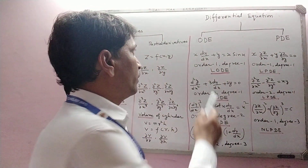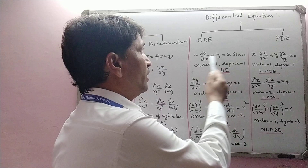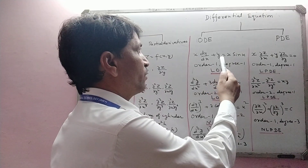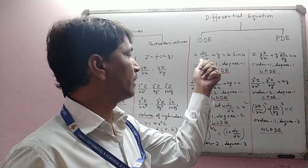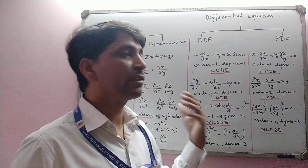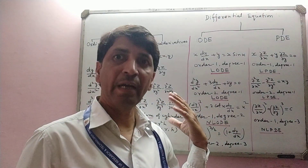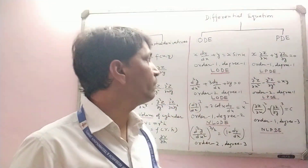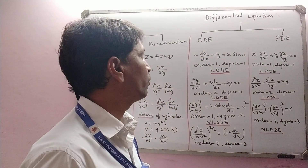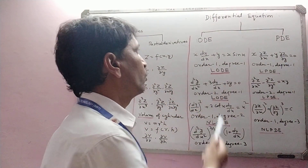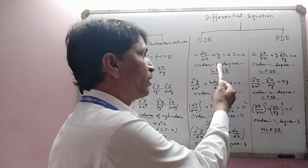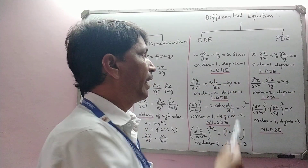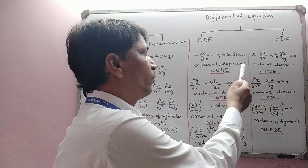Suppose this differential equation: x·(dy/dx) + y = x·sin(x). Here dy/dx is an ordinary derivative and its order is 1, so the order of this differential equation is 1 and its degree is 1.